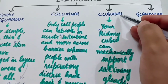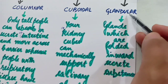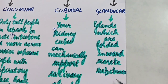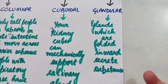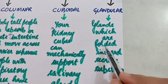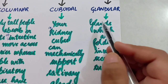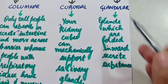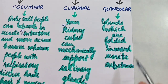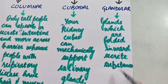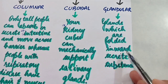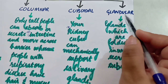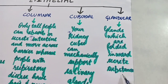Last is glandular epithelium. The sentence is: 'Glands which are folded inward secrete substances.' Sometimes a portion of the epithelial tissue folds inward, and when it folds inward, glands are formed — and that is known as glandular epithelium. Such glandular epithelium has the main function of secreting substances. A multicellular gland is formed there, and the function of glandular epithelium is to secrete various substances at the surface.